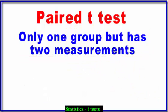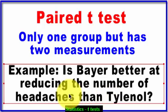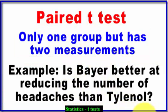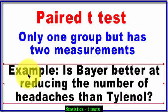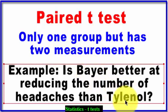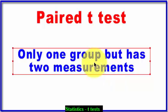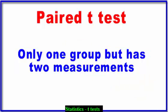Again, in a paired t-test, there's one group. Everybody took the pre-test and everybody takes the post-test — there's only one group. Here's a second type of paired t-test example: is aspirin better at reducing headaches than Tylenol? Everybody takes the aspirin and counts their headaches. Six months later, the same people take Tylenol and count their headaches, and you compare the two means. Again, there's only one group, but they each took the aspirin and each took the Tylenol — two measurements.